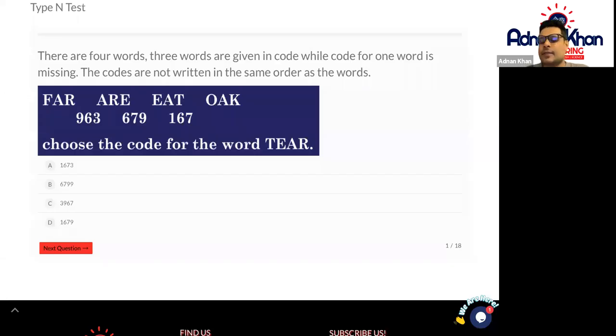Hello there, we're looking at verbal reasoning codes. These are Type N codes, so there are four words. Three words are given in code while code for one word is missing. The codes are not written in the same order as the words, so we need to work out and choose a code for the word TEAR.